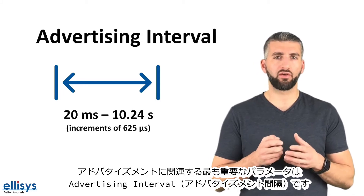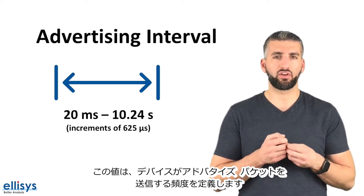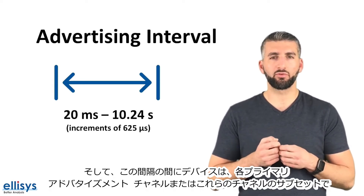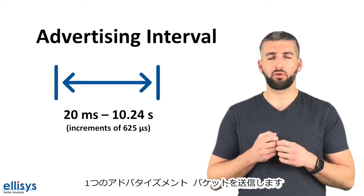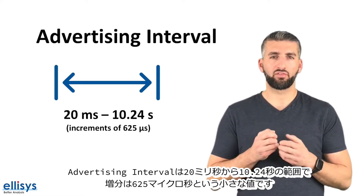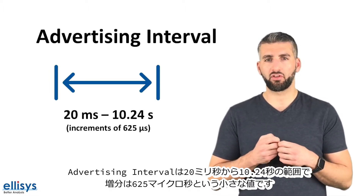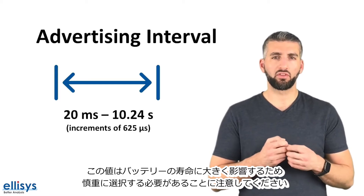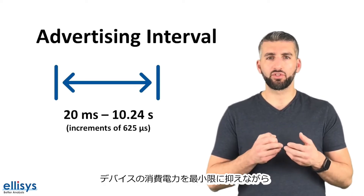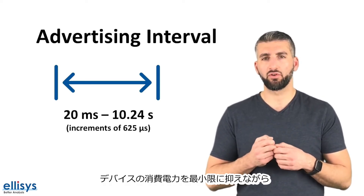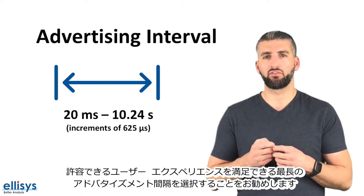The most important parameter related to advertisements is the advertising interval. This value defines how often a device sends out advertising packets. During this interval, the device will send out one advertising packet on each of the primary advertising channels, or on a subset of these channels. The value of the advertising interval ranges between 20 milliseconds and 10.24 seconds in increments of 625 microseconds. Keep in mind that this value greatly impacts battery life and must be chosen very carefully, so it's recommended to choose the longest advertising interval that can still satisfy an acceptable user experience while achieving the lowest power consumption.